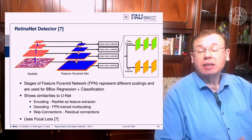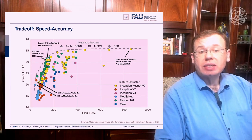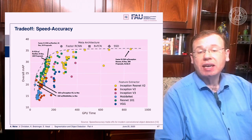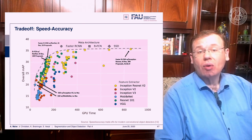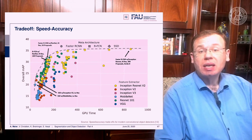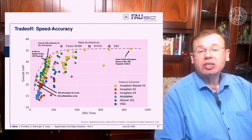RetinaNet also uses the focal loss, which we will talk about shortly. Looking at the tradeoff between speed and accuracy: generally, networks that are very accurate are not so fast. On the x-axis you see GPU time and on the y-axis the overall mean average precision. You can combine architectures like single-shot detectors, regional fully connected networks, or faster R-CNN with different feature extractors like Inception ResNet, Inception, and so on, producing many different combinations. Spending more computation time typically increases accuracy.